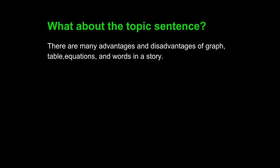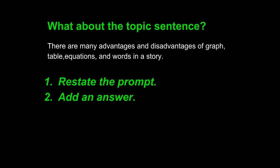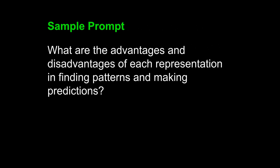If you want to write a clear topic sentence, you must complete two tasks: restate the prompt and answer it. Both of these tasks can be completed in a clear, direct, and short topic sentence. The prompt asks: what are the advantages and disadvantages of each representation in finding patterns and making predictions? In sizing up this prompt and preparing for your topic sentence, you must consider what noun it is asking about — what is the core idea?